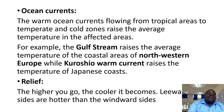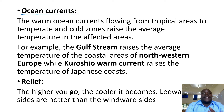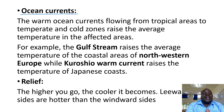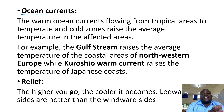Then we have ocean currents. We have ocean currents of two types according to their temperature — warm ocean currents and cold ocean currents. Areas served by cold ocean currents are always hotter, even forming deserts, compared to areas served by warm ocean currents.